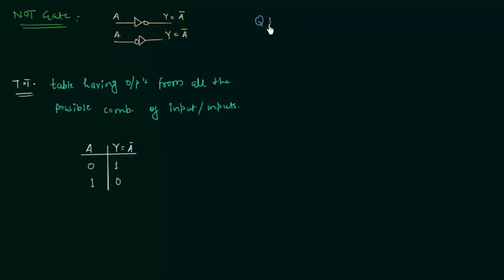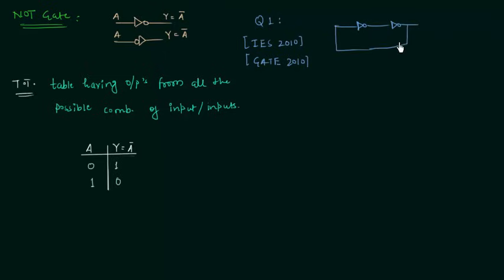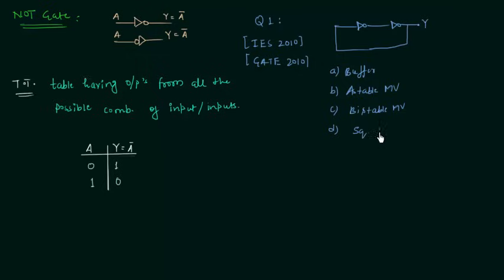Now we will move to Question 1, which appeared in IES 2010 and also in GATE 2010. In this problem we have a circuit with two NOT gates and feedback. Y is the output, and we have to determine whether this circuit is: A — a buffer, B — an astable multivibrator, C — a bistable multivibrator, or D — a square wave generator.